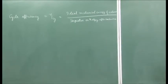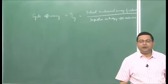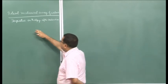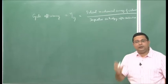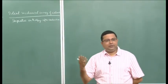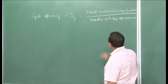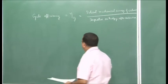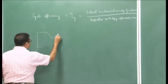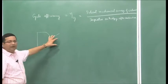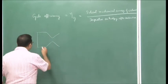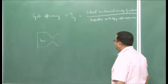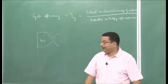Let us see what this physically means. The stagnation enthalpy after combustion is the total energy available with the hot gases after combustion has occurred. The cycle efficiency essentially represents how much of this total enthalpy available is being converted to effective thrust — that is, the ideal mechanical energy of the exhaust, which is essentially the kinetic energy of the exhaust.